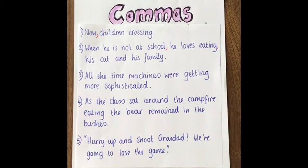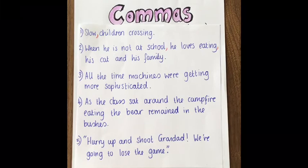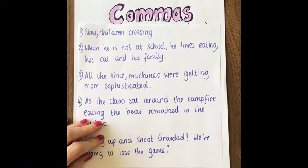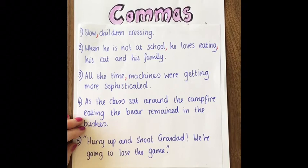In our third sentence: 'all the time machines were getting more sophisticated.' Time machines don't actually exist, so we want to change the meaning. We should have: 'All the time, machines were getting more sophisticated.' It shows that machines were getting more sophisticated over time — we're not actually talking about time machines.